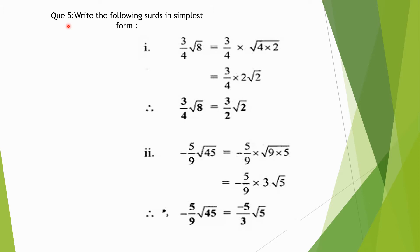Now we will be doing Question No. 5: write the following surds in simplest form. The first question: 3 upon 4√8 is equal to 3 upon 4 multiplied to square root of 4 multiplied to 2. Square root of 8 can be written as √(4×2). When we take square root of 4 it will be 2√2. So multiplying 3 by 4, 2 and 4 will be cancelled. We get 3 upon 4√8 is equal to 3 by 2√2.